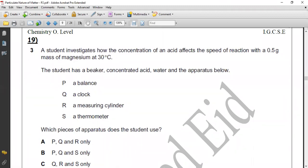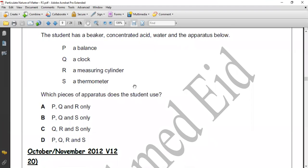Question 19. A student investigates how the concentration of an acid affects the speed of reaction - speed of reaction needs clock - with 0.5 gram - needs balance - of magnesium at temperature 30 degrees centigrade, so it needs thermometer. The student has beaker, concentrated acid, water. Because we need to measure the volume of concentrated acid in each step, we need measuring cylinder. So the correct answer is all of them, which is G.